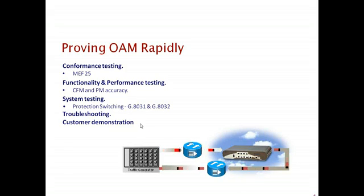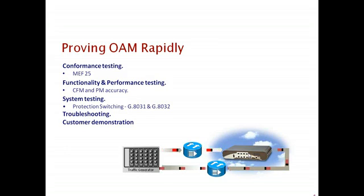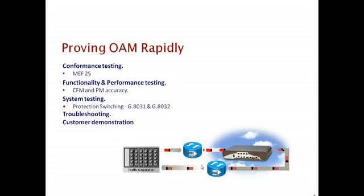System testing for OAM, including 802.1ag and 802.3ah protection switching, can be done, as well as ultimately troubleshooting any problems that occur. The Paragon can also be used for demonstration of OAM functionalities. By using the Paragon X to accurately recreate a particular delay or frame loss condition and showing that the network management system reports the same, you can verify and validate OAM functionality.